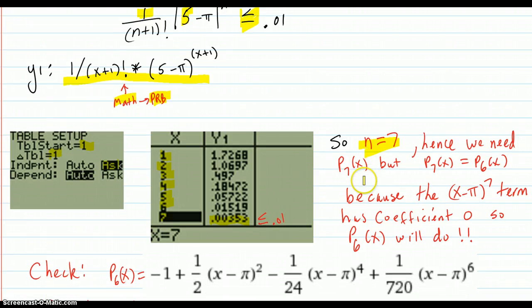Hence we need P₇, the 7th degree Taylor polynomial to make the error at 5 be less than 0.01.